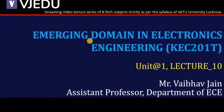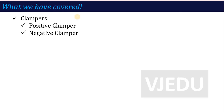Hello everyone, welcome to the video lecture series of Emerging Domain in Electronics Engineering. The subject code is KEC201T and here we are in lecture number 10 of unit number 1. In the previous lecture, we covered a very important topic — Clamper. We discussed how when a capacitor is available in the circuit, the output level shifts. We discussed two types of Clamper with numerical problems: positive Clamper and negative Clamper.